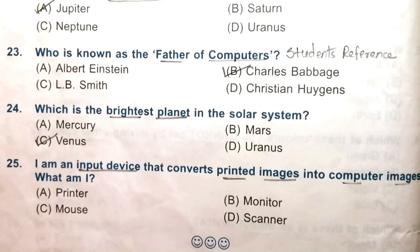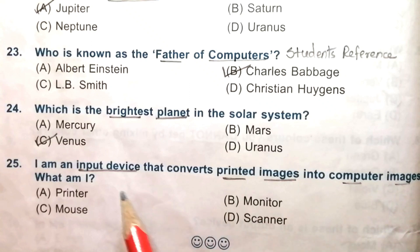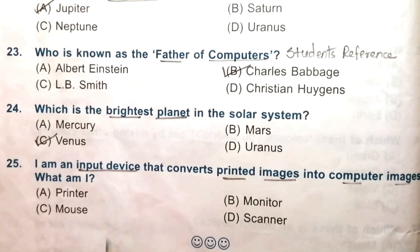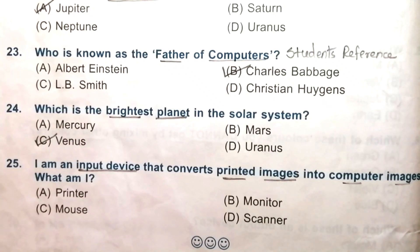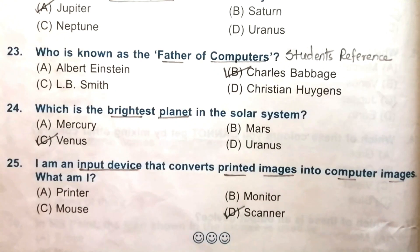Question 25: I am an input device that converts printed images into computer images. What am I? Printer, monitor, mouse, or scanner. The answer is D, scanner.